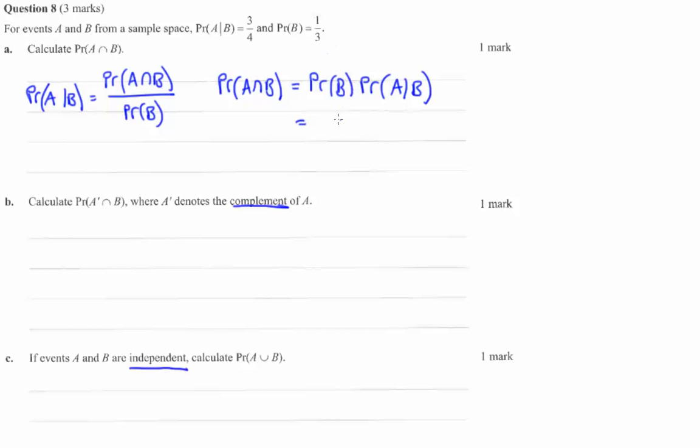Then, we have the probability of B is one third, times the probability of A given B is three quarters, and that is one quarter.